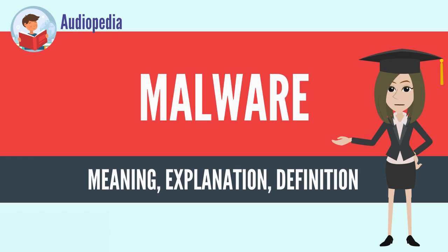Malware has a malicious intent, acting against the interest of the computer user, and so does not include software that causes unintentional harm due to some deficiency, which is typically described as a software bug. Programs officially supplied by companies can be considered malware if they secretly act against the interests of the computer user.